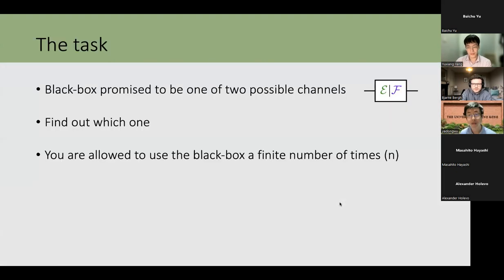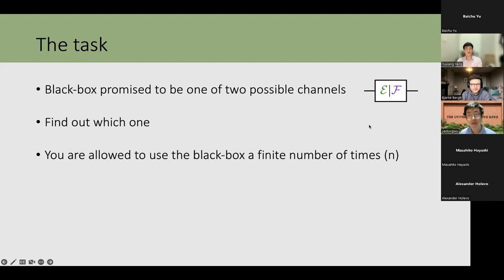To start, let me introduce the task: what is quantum channel discrimination? The idea is that somebody gives you a black box which is a channel — you put in a state and get out a quantum state — and they promise that this black box acts as one of two channels, either channel E or channel F. The task is to find out which channel actually sits in the black box.